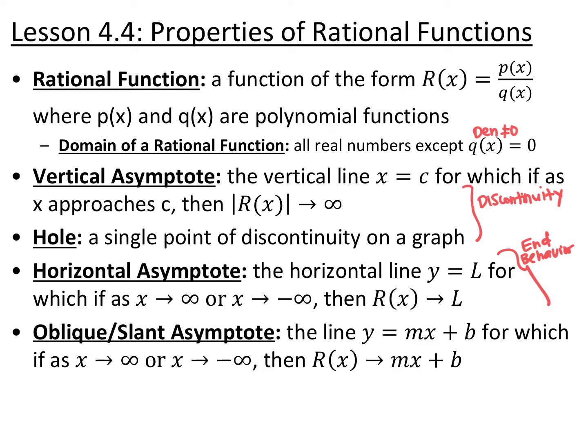Lesson 4.4 is properties of rational functions. A rational function is a function of the form r(x) equals p(x) divided by q(x), where p and q are polynomial functions. Basically, you take two polynomials and you divide them.